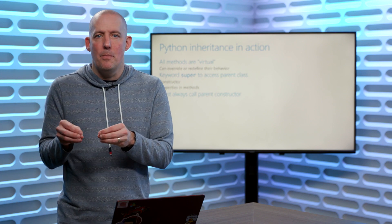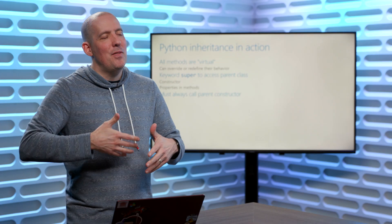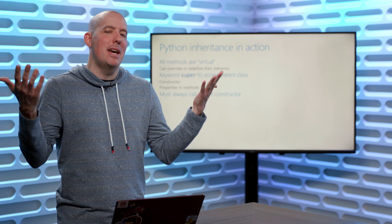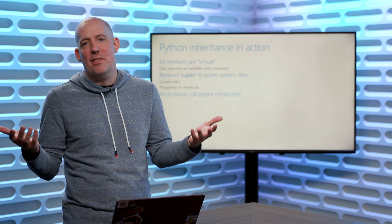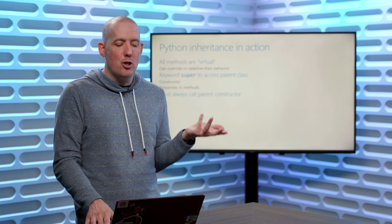Let's talk about this in action. One thing to highlight right away is that all methods in Python are virtual, which means we're always going to be able to override them and redefine their behavior. We're going to notice that we've got the keyword super to access the parent class. We are going to need to do this in the constructor — we must always call the parent constructor. And if there's a field, property, or method I want from that super class, I can access it using the super keyword.